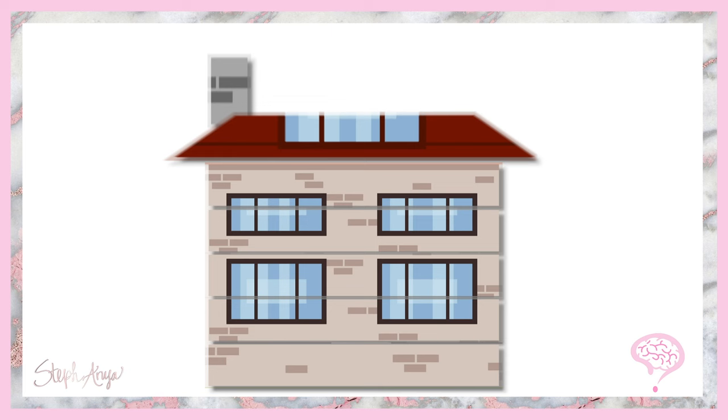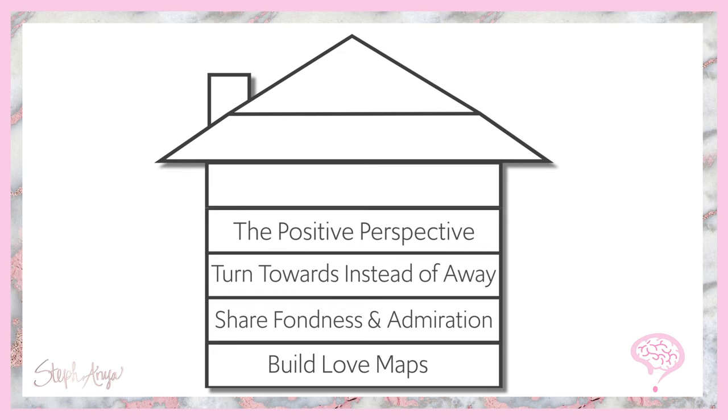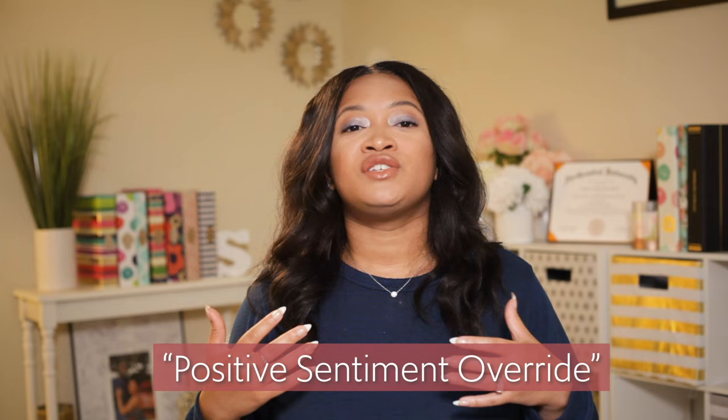The next layer — which is really a summation of those previous three — is to maintain a positive perspective, what Gottman calls a positive sentiment override. By maintaining admiration, inquiring about your partner through love maps, and turning toward them, you create an understanding that your relationship is positive. It makes it easier to respond positively later when you build that habit now. This doesn't mean you never say anything negative — it just means that more often than not, your relationship is characterized by more positivity than negativity.